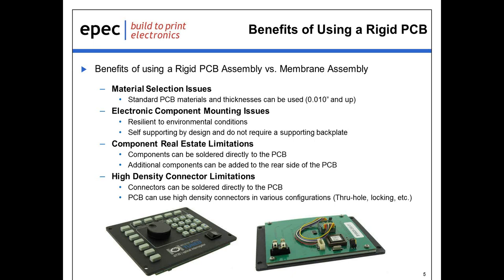We also gain real estate for additional components. Components can be placed on the back side of these rigid printed circuit boards, as you can see in the picture below, and they are soldered directly to the board itself. We also alleviate the high-density connector limitations seen with membrane-style switches. We can go under the one-mil pitch, and we have various connector configurations available — through-hole, surface-mount, and locking-type connectors — giving us endless options in connector selection.